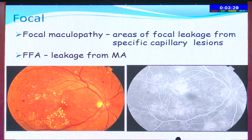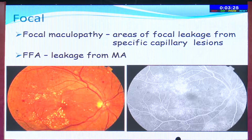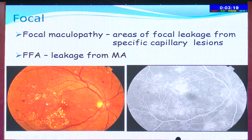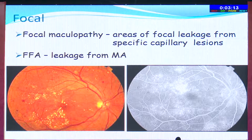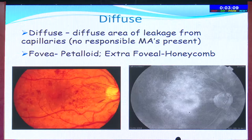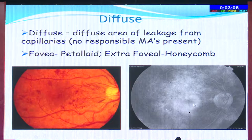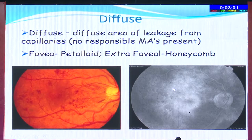In clinical practice, diabetic macular edema gives a focal type of leakage on angiogram. Depending on the type of focal macular edema, if it is in the fovea you get a petaloid pattern, and if it is extra-foveal you get a honeycomb pattern. Here you can see the petaloid pattern, and chronic extra-foveal edema can lead to a honeycomb pattern.